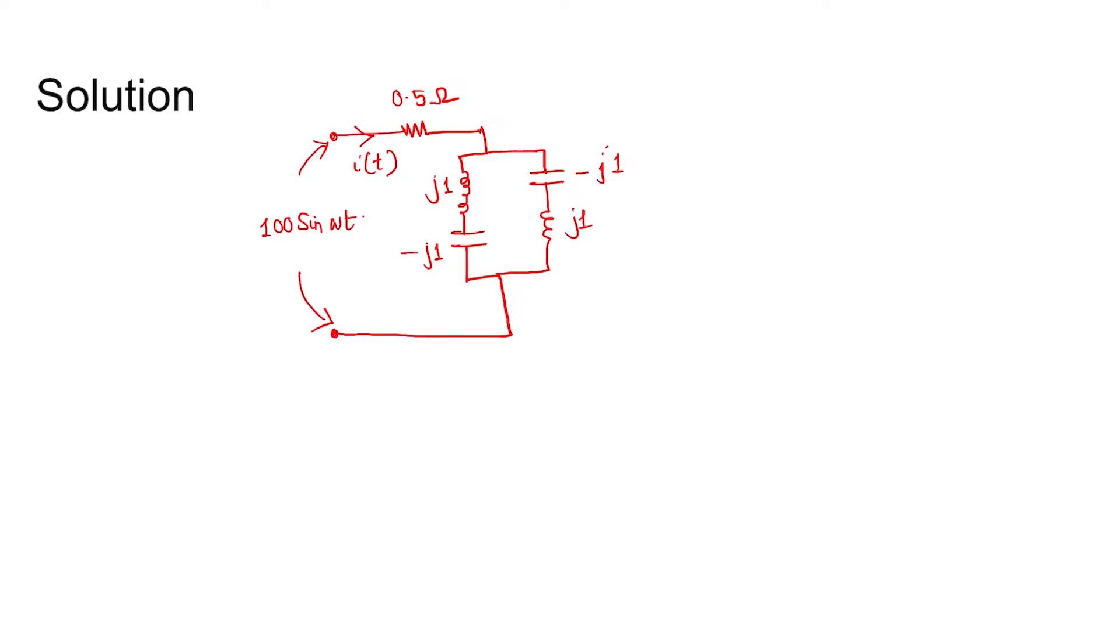Now you see the impedance of these two branches are the same and they are zero. Zero parallel zero is zero because they are actually shorted like this and connected with this resistance. So you can draw this equivalent circuit like this, single connected via a single wire, and then 0.5 ohm and 100 sin(ωt).